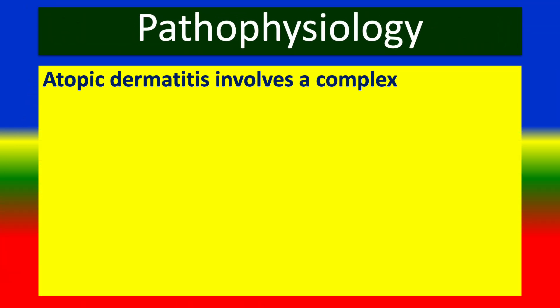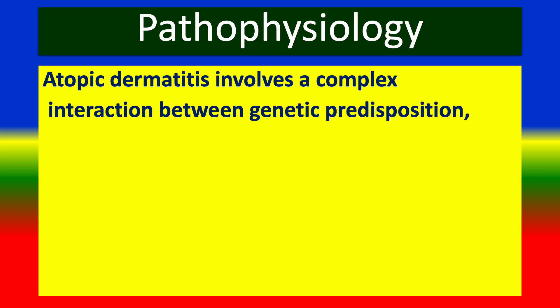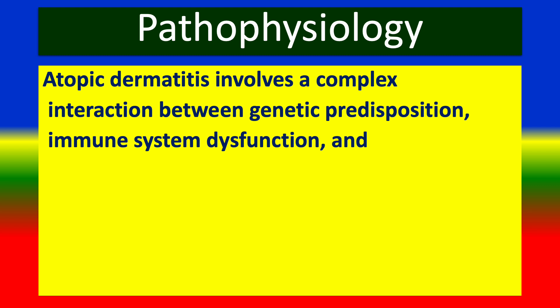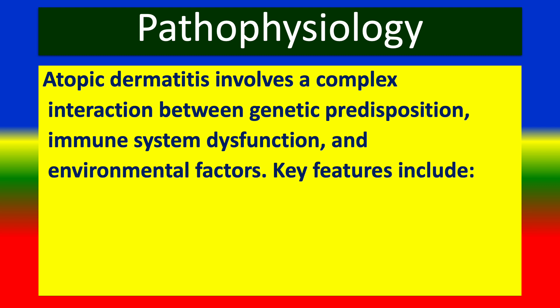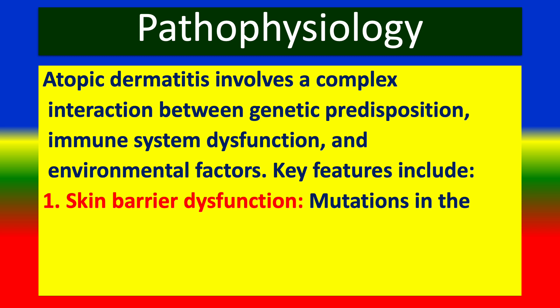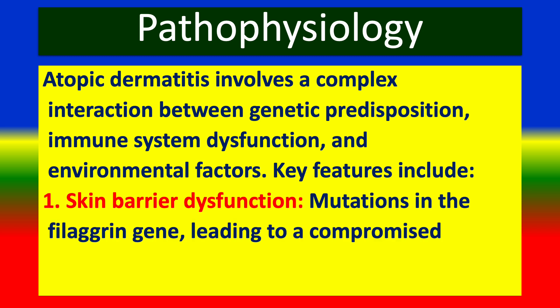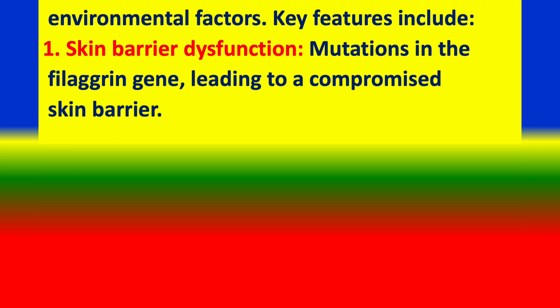Pathophysiology. Atopic dermatitis involves a complex interaction between genetic predisposition, immune system dysfunction and environmental factors. Key features include skin barrier dysfunction — mutations in the filaggrin gene leading to compromised skin barrier.